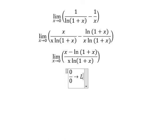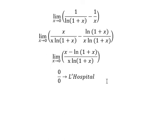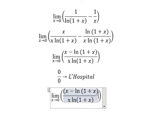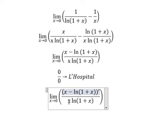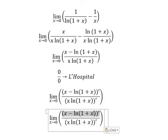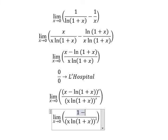We can use L'Hôpital's rule — that means we take the first derivative of the numerator and denominator. So the first derivative of S gives us 1; the first derivative of ln(1+S) gives us 1 over (1+S).